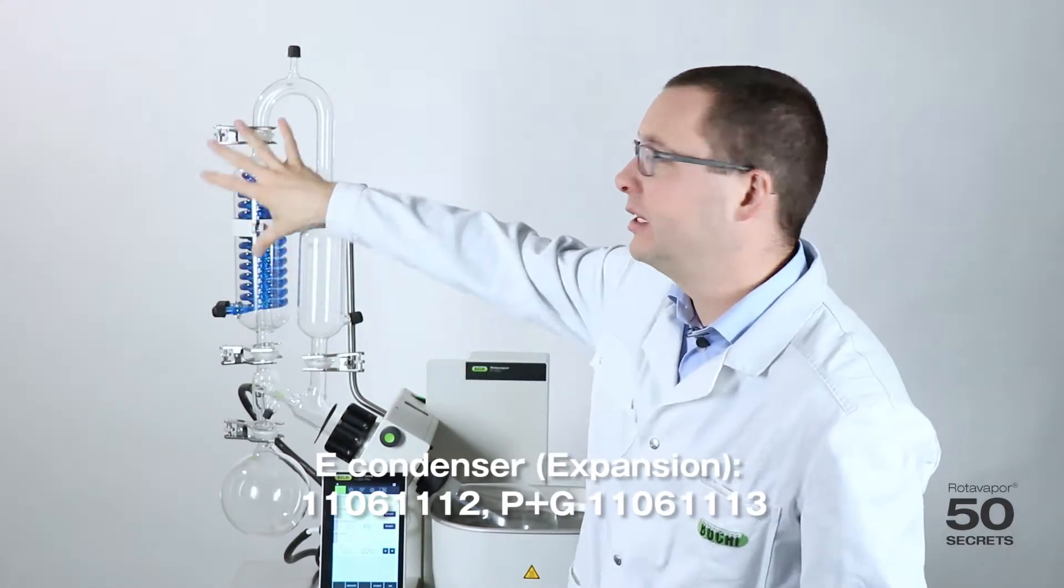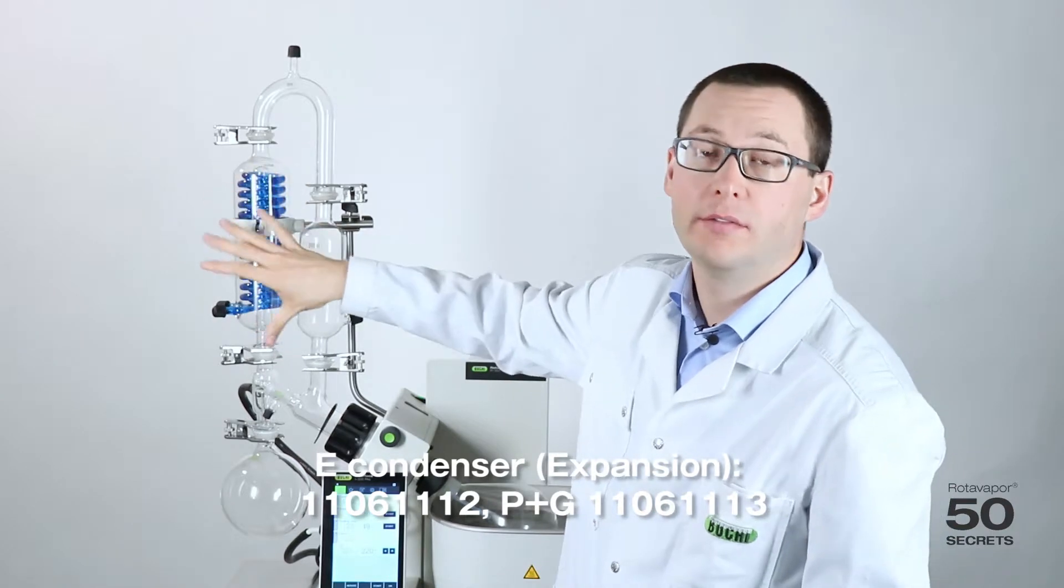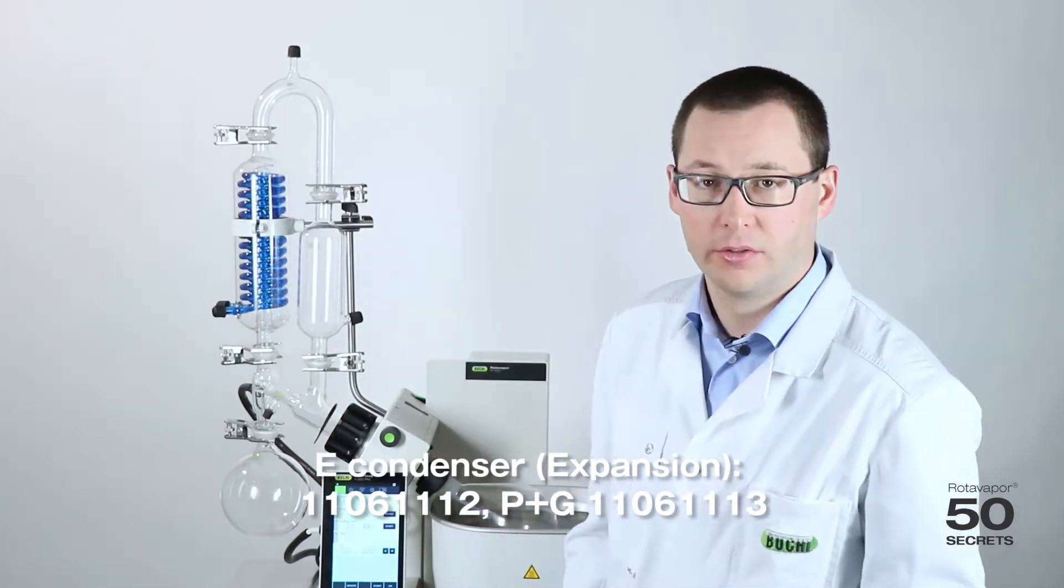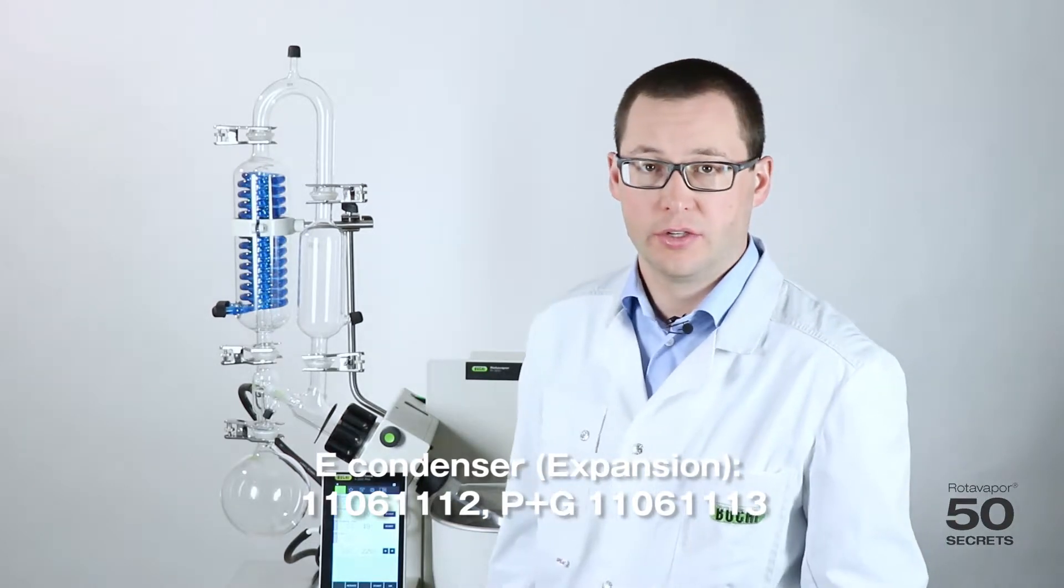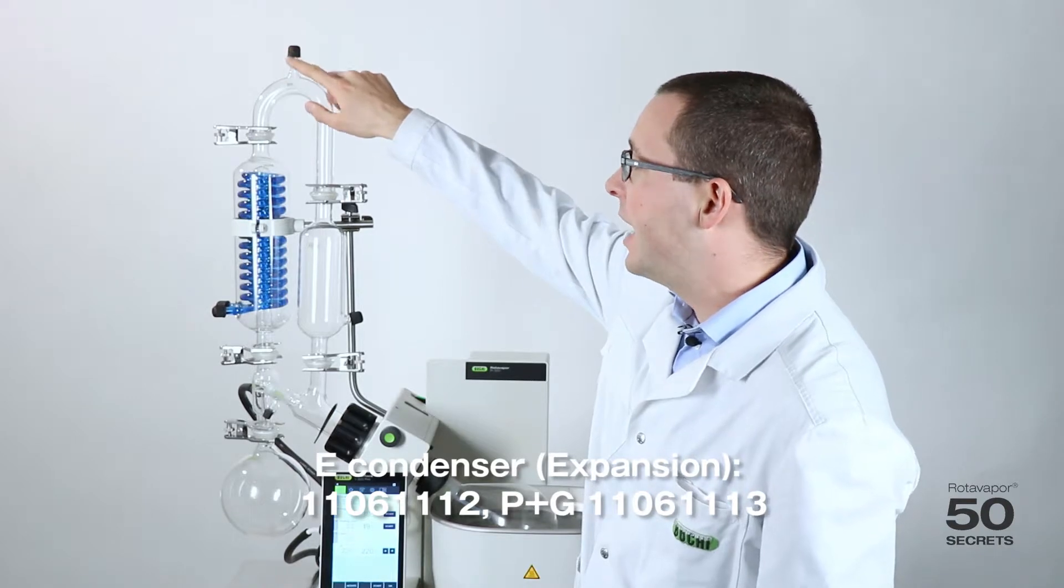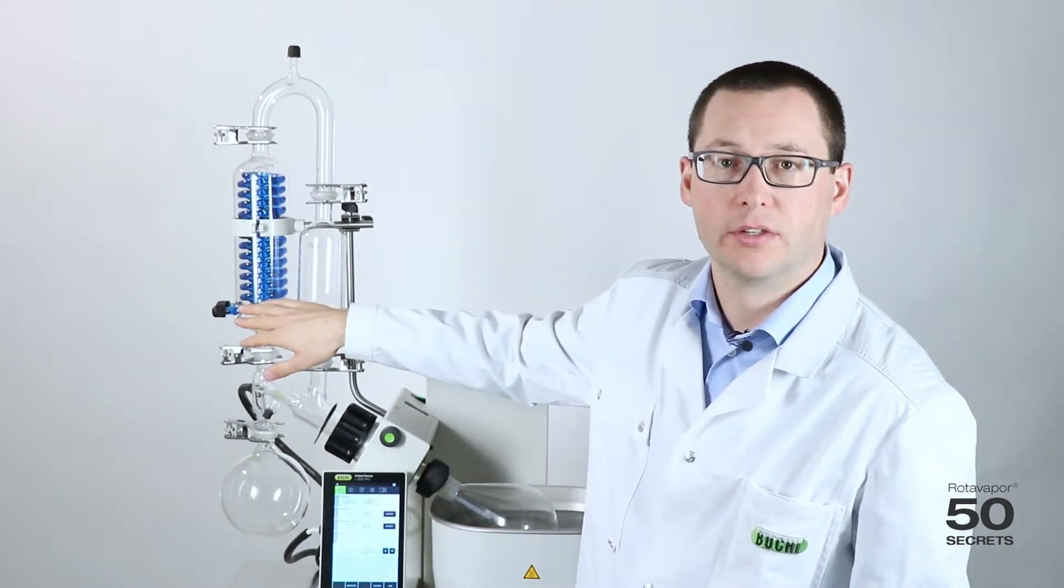So that means you don't have to clean all that part if you have heavy foaming or heavy bumping products. So that's the big advantage of the E condenser. It is compatible with the vapor temperature sensor and the autodesk sensor as well.